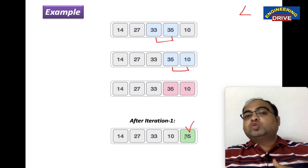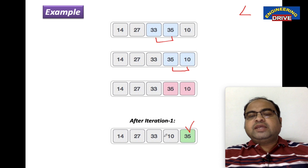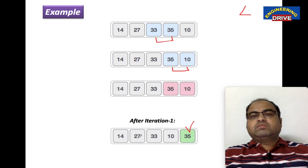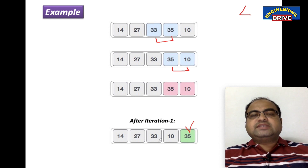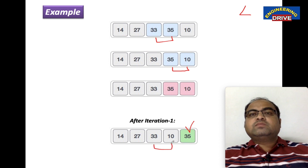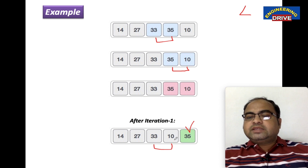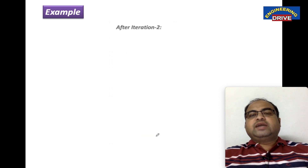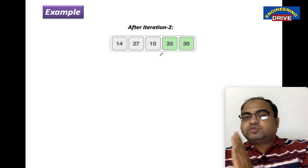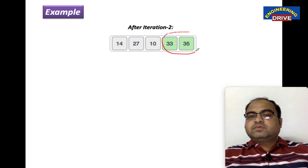Now we start iteration 2 on the remaining numbers, excluding 35. Compare 14 with 27 — 14 is less than 27, condition true, no swap. 27 is less than 33, condition true, no swap. 33 is less than 10 — condition false, so we swap: 10 comes to 33's position and 33 comes to 10's position. After iteration 2 we get this result, and now two numbers are in the safe zone — the two biggest numbers in sorted order.